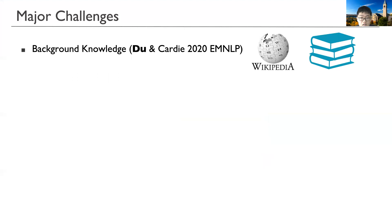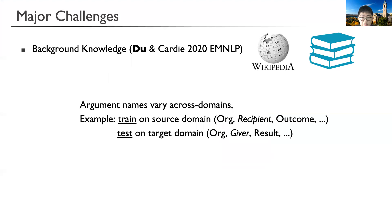The second challenge is the lack of background knowledge. For example, the argument names might be different across domains. Better modeling of background knowledge is definitely needed for the model to perform well at test time on arguments that are not seen at training time.